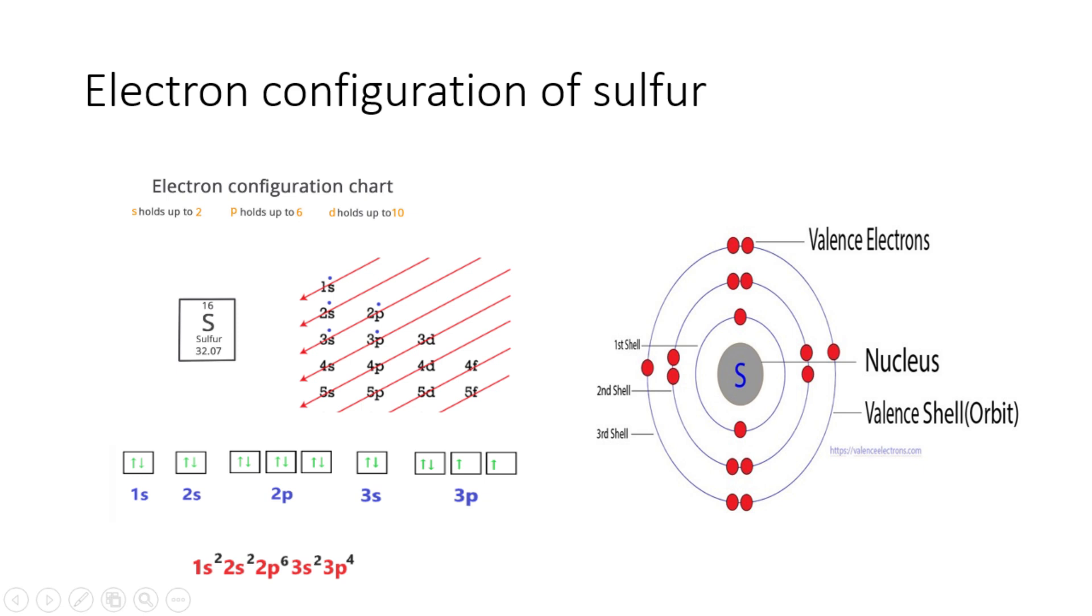The electron configuration can be expressed as following: 1s^2, 2s^2, 2p^6, 3s^2, and 3p^4. The numbers in black indicate the number of electrons in each subshell.